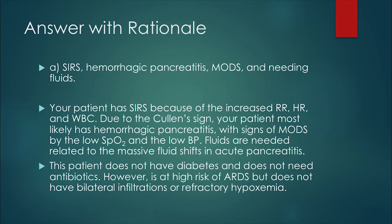And the answer is A: SIRS, hemorrhagic pancreatitis, MODS, and needing fluids. Your patient has SIRS because of increased heart rate, respiratory rate, and WBCs. Due to the Cullen's sign, your patient most likely has hemorrhagic pancreatitis, with signs of MODS indicated by the low SpO2 and low blood pressure. Fluids are needed related to the massive fluid shifts in acute pancreatitis. This patient does not have diabetes and does not need antibiotics. However, she is at risk of ARDS but does not have bilateral infiltrations or refractory hypoxemia.